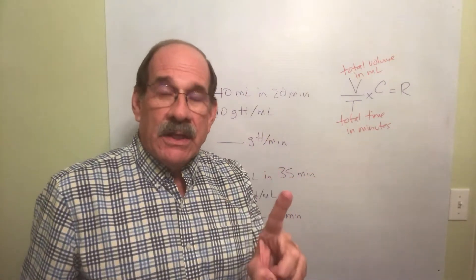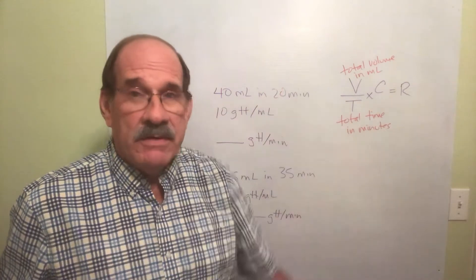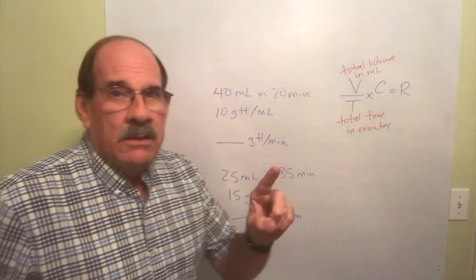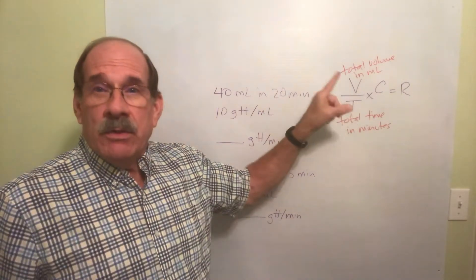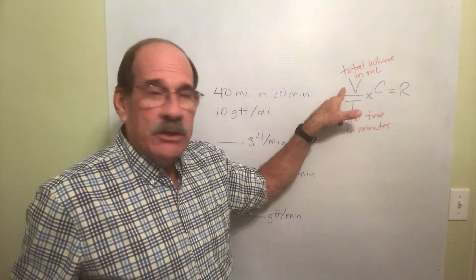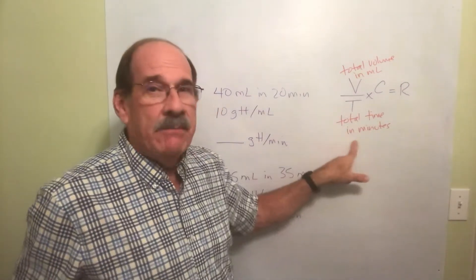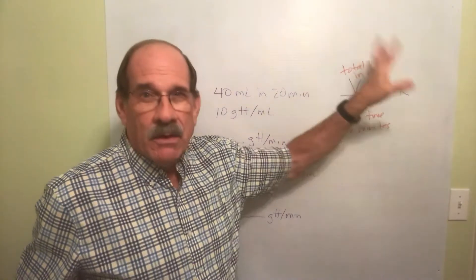If it's less than—now you should have watched the other video first. This makes no sense to you, watch the video above this. This will make sense once you watch that. But we switched out the way to do it. The V in this case is total volume in milliliters and that's the total time in minutes, not the number 60. And that's a drop factor like always.